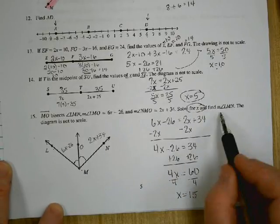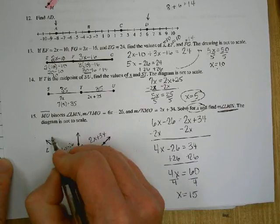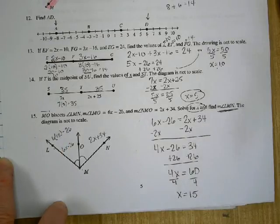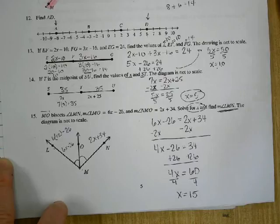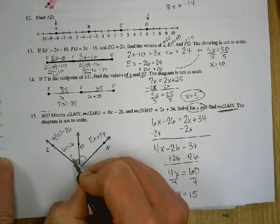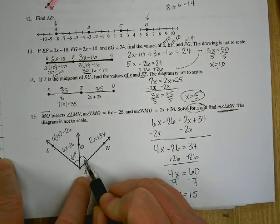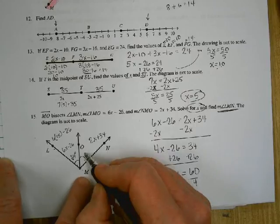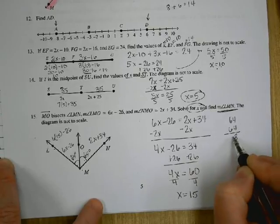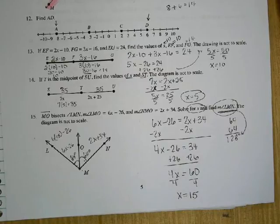So find the value of x. We did. Now find the measure of LMN. That's the whole thing. So I'm going to have to plug this in. 6 times 15 minus 26. 6 times 15 is 90. Minus 26 is 64. So this angle is 64 degrees. If this angle is 64 degrees, what does this angle have to be? 64 degrees. So all together, angle LMN is 128 degrees.